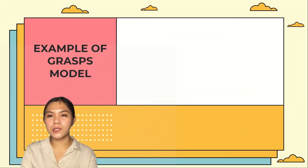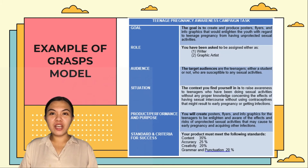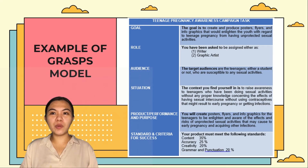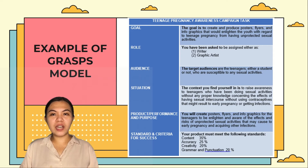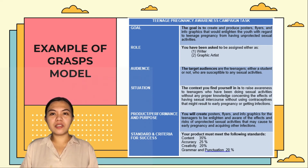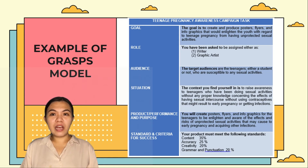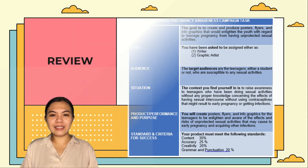Here is an example of the GRASPS model. In this activity, students are tasked to think of concepts on how they would present flyers, infographics, and posters to raise awareness for teenage pregnancy, as well as how to get the attention of the audience. They will be asked to act as graphic artists and writers to come up with a product that is effective in informing the youth. The product should meet standards such as content, accuracy of information, creativity, and use of grammar and punctuation. These criteria will be the basis for students to produce a successful and effective product that will enlighten the audience.